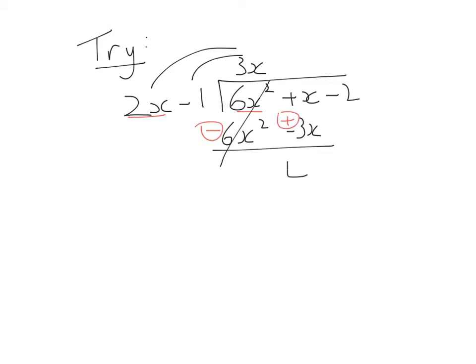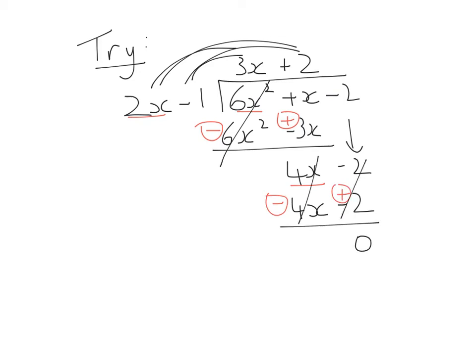These cancel, and I'm left with 4x. Bring down my -2. Start the entire process again. What do I multiply by 2x to get 4x? That's +2. Multiply it by both of the other terms, which gives me 4x - 2. Change both their signs. These guys all cancelled to give me 0, so therefore my answer is 3x + 2.